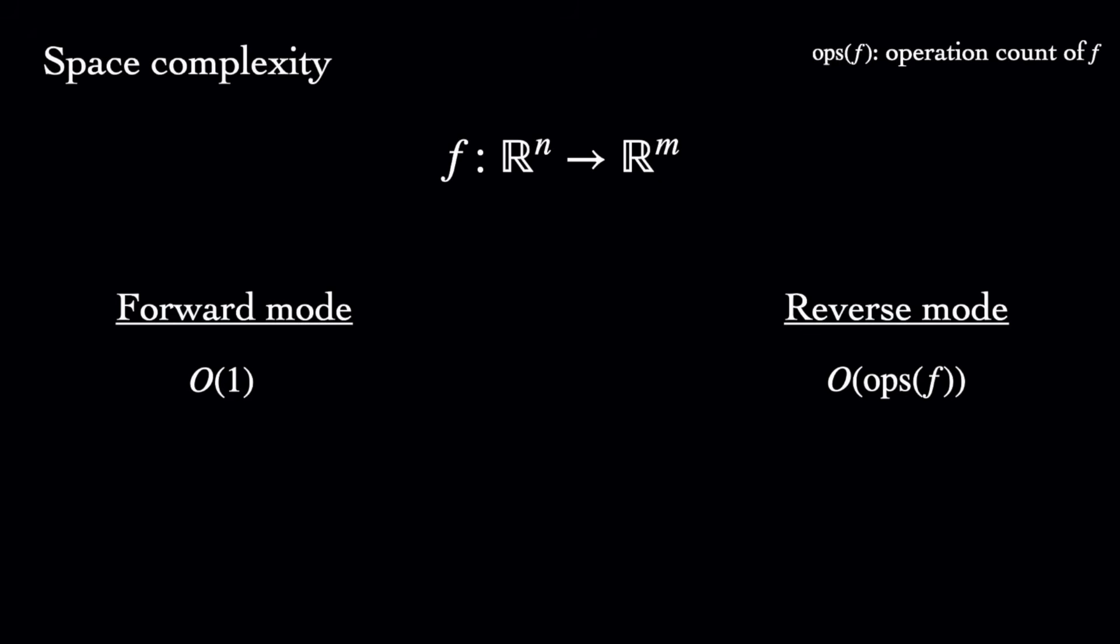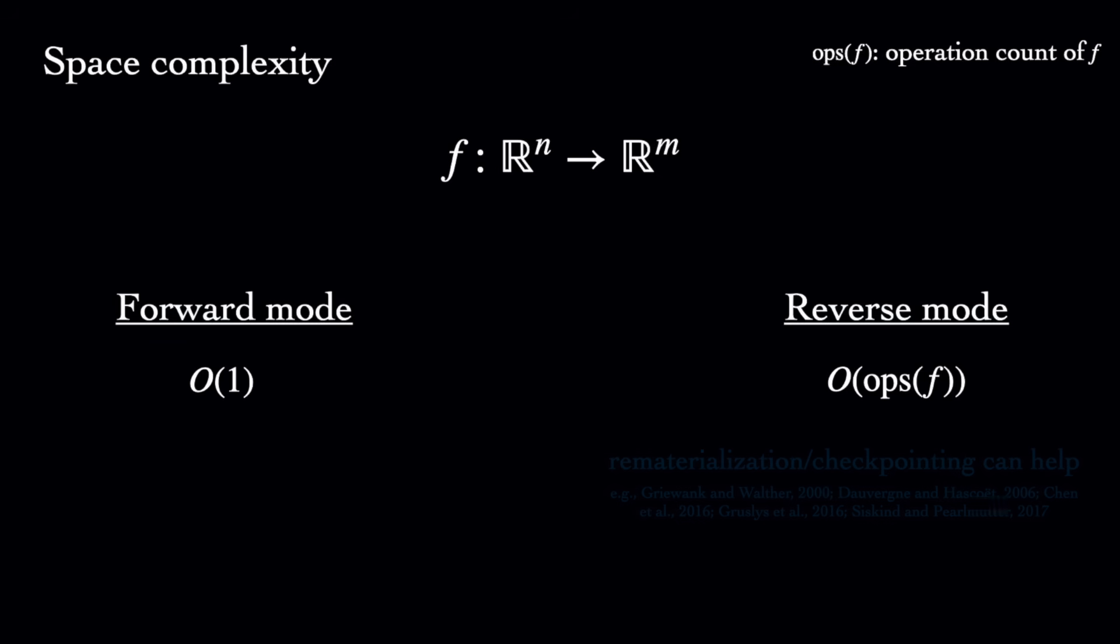Reverse-mode is usually a bit more memory-intensive than forward. We have to store the values of intermediate variables and their dependencies in memory. Various techniques have been developed that help make this more efficient, including rematerialization, where only a subset are stored and the remainder are recomputed during the backwards pass.